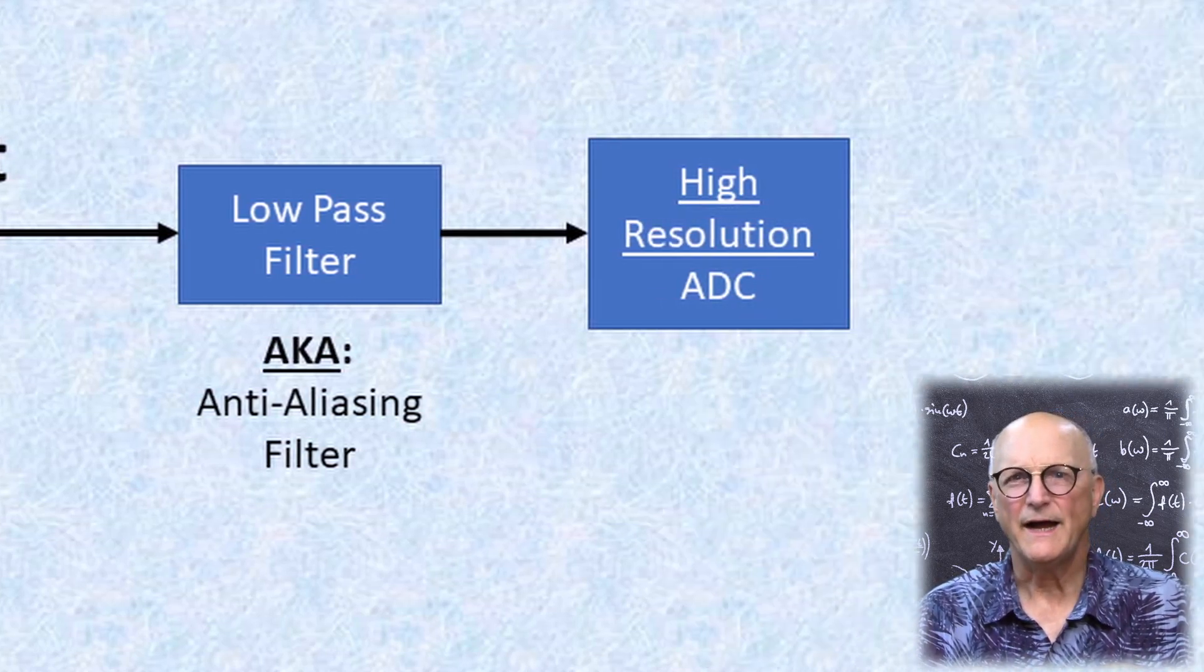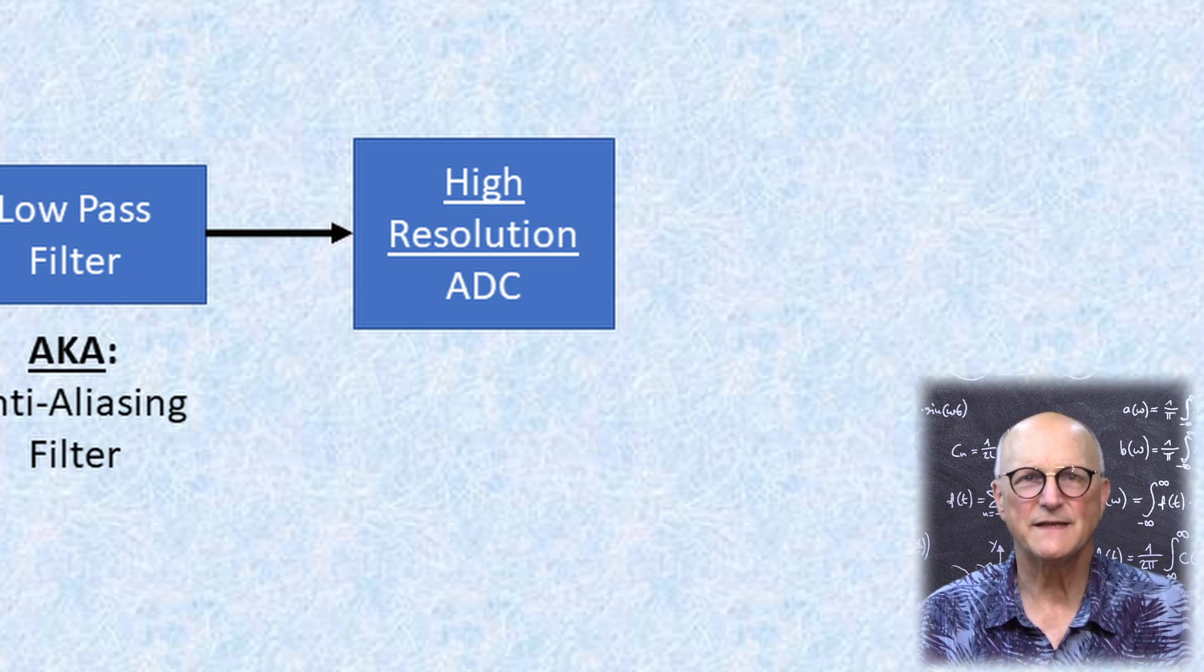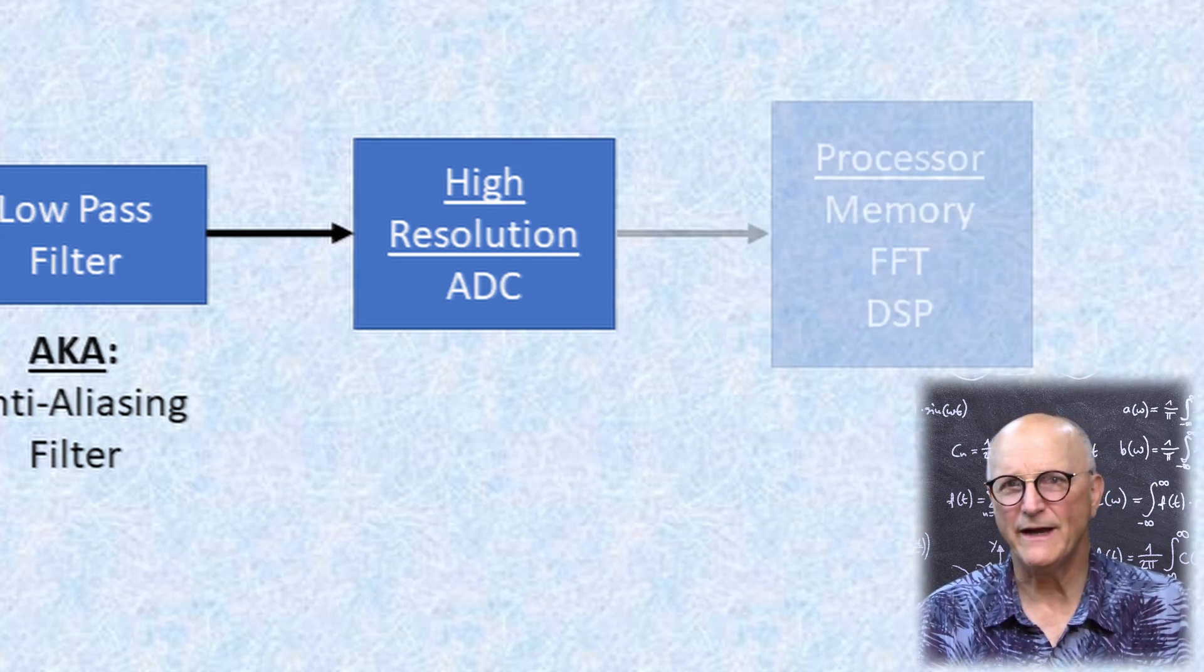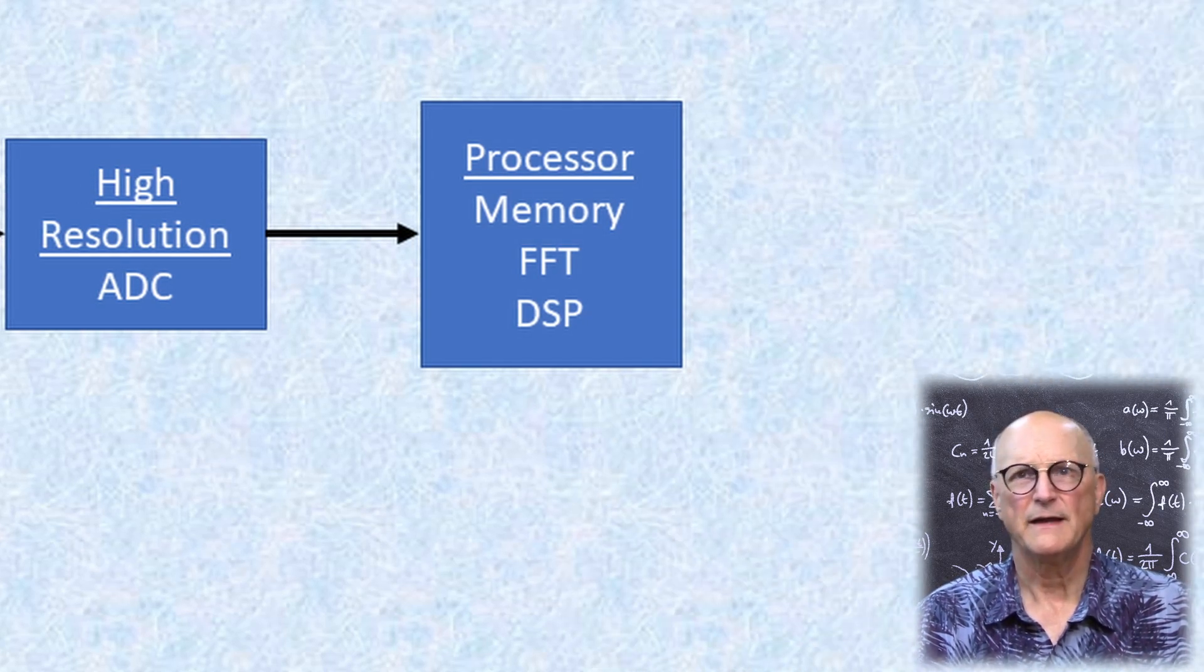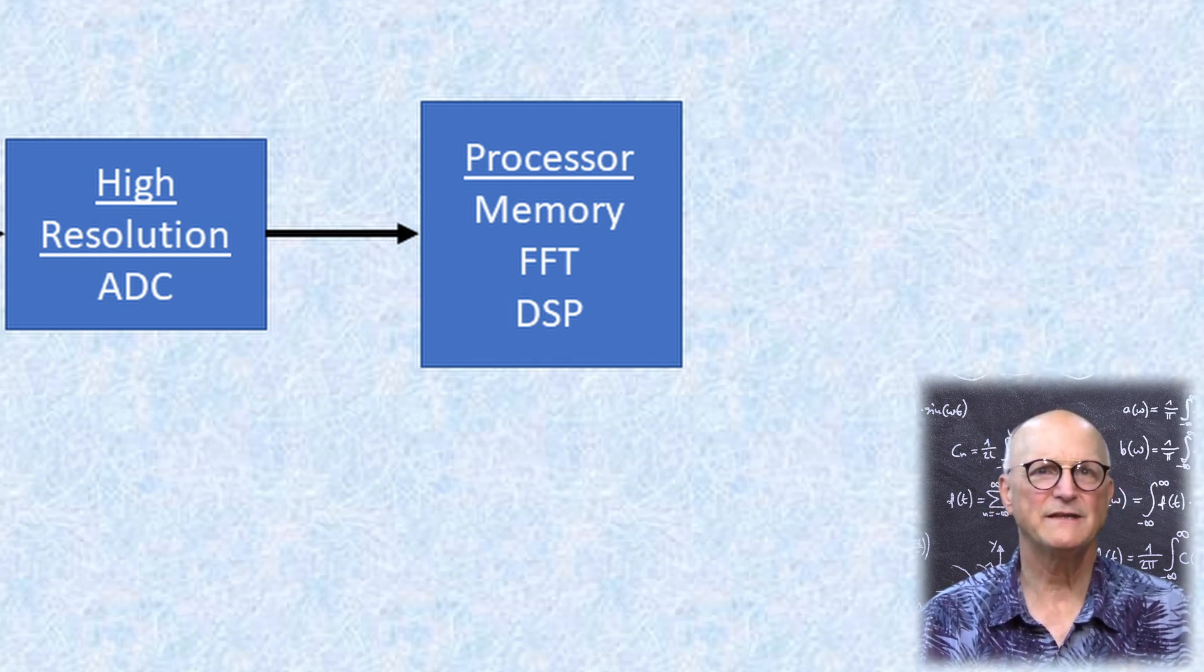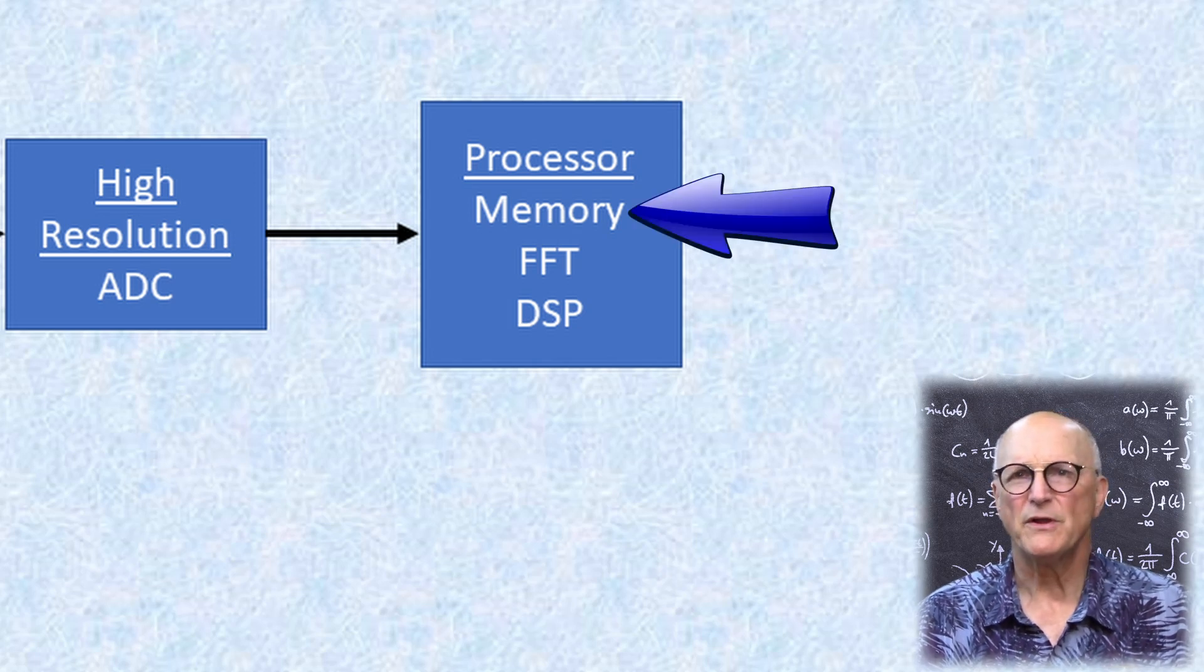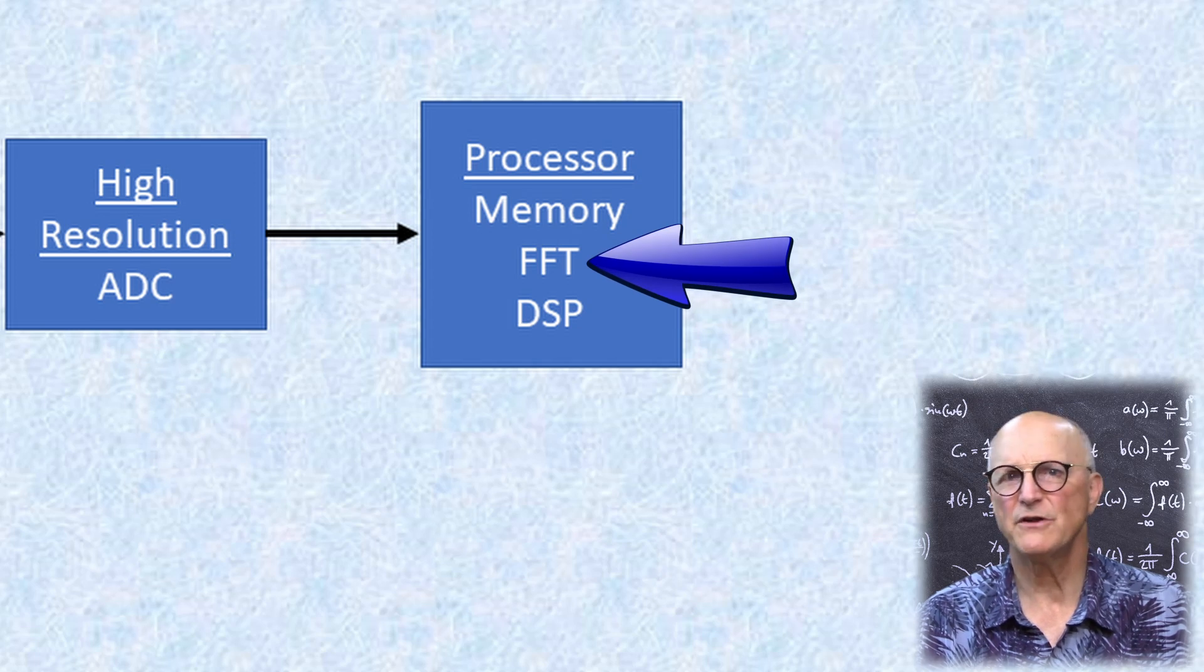We then come to the high-resolution analog-to-digital converter or ADC, which samples the time domain data at a fixed rate and provides these samples to the processor. The ADC samples are placed in memory, and then the processor performs the fast Fourier transform or FFT on this data.